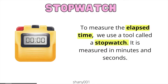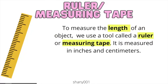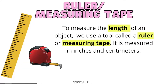Stopwatch. To measure the elapsed time, we use a stopwatch. To measure the length of an object, we use a tool called a ruler or measuring tape. It is measured in inches and centimeters.